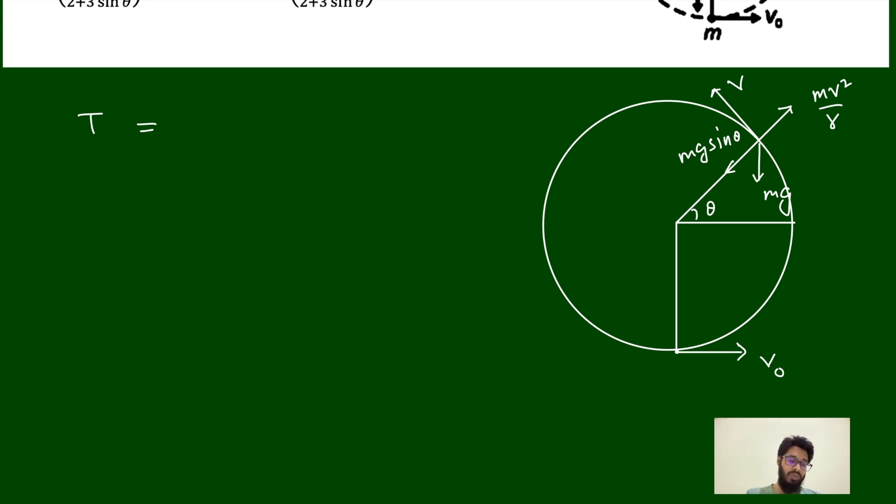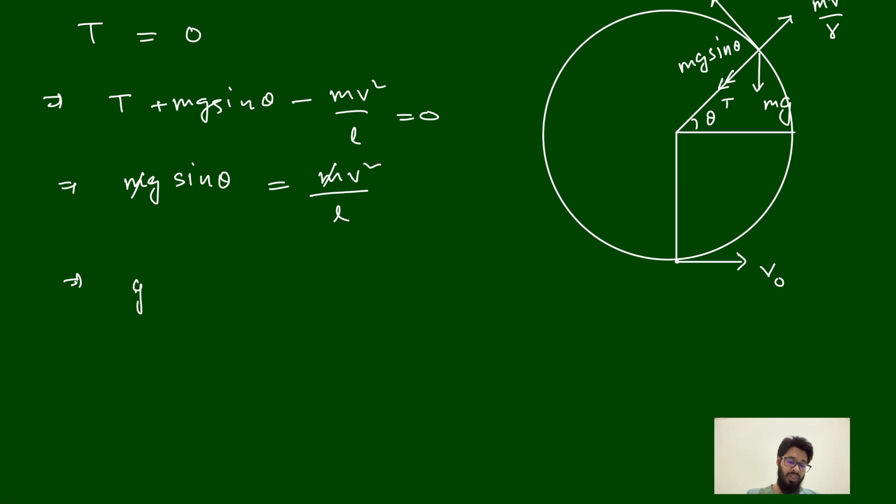So T plus mg sine theta minus mv square by radius, suppose r, that radius is nothing but length of the string, so L is equal to zero. When tension is zero, then we can say mg sine theta is equal to mv square by L. This is one equation.